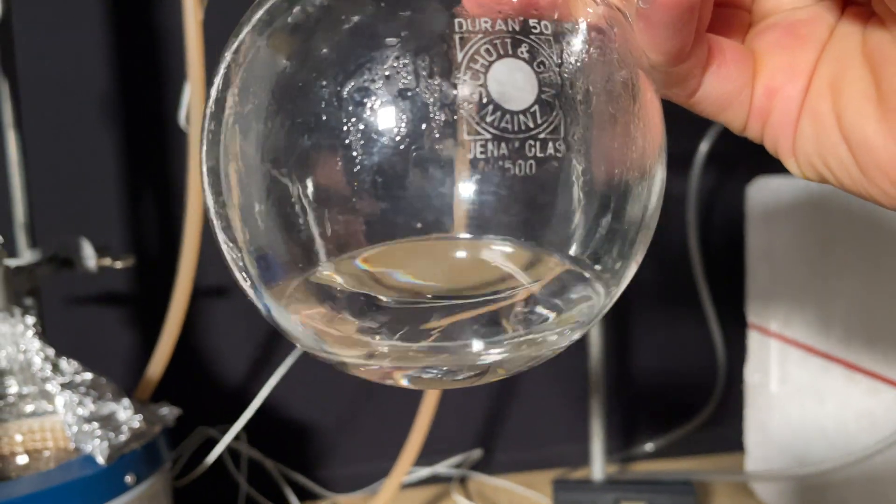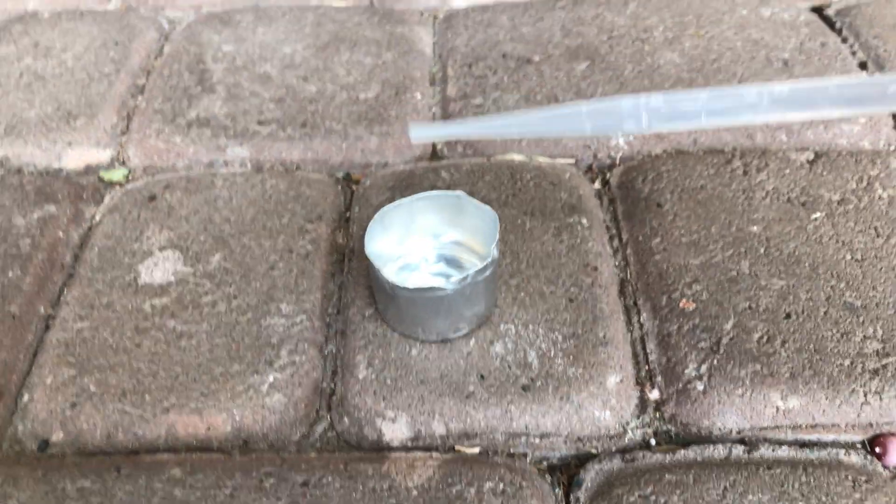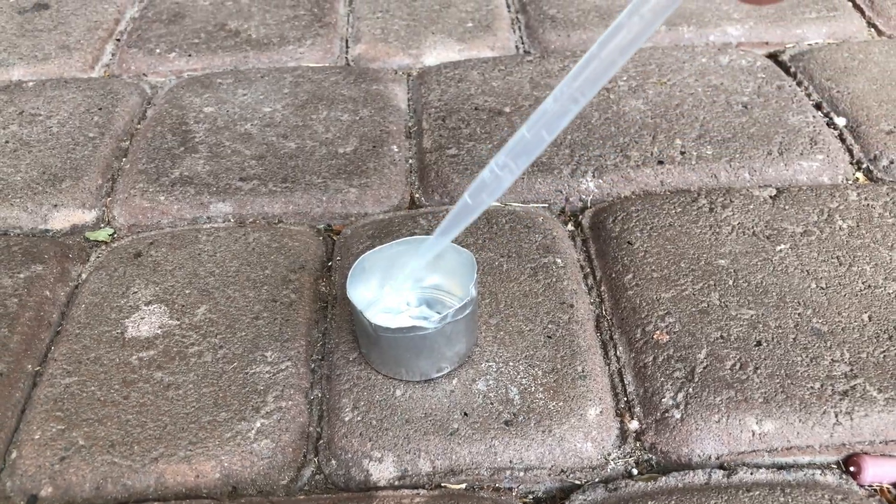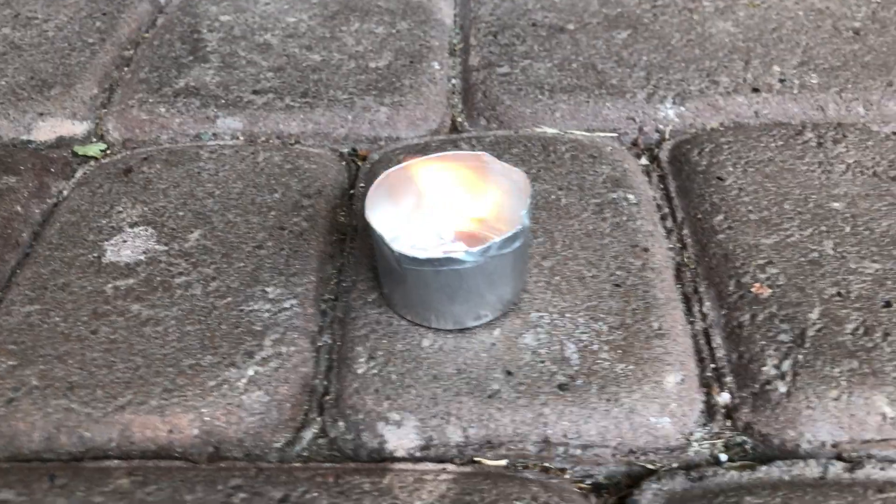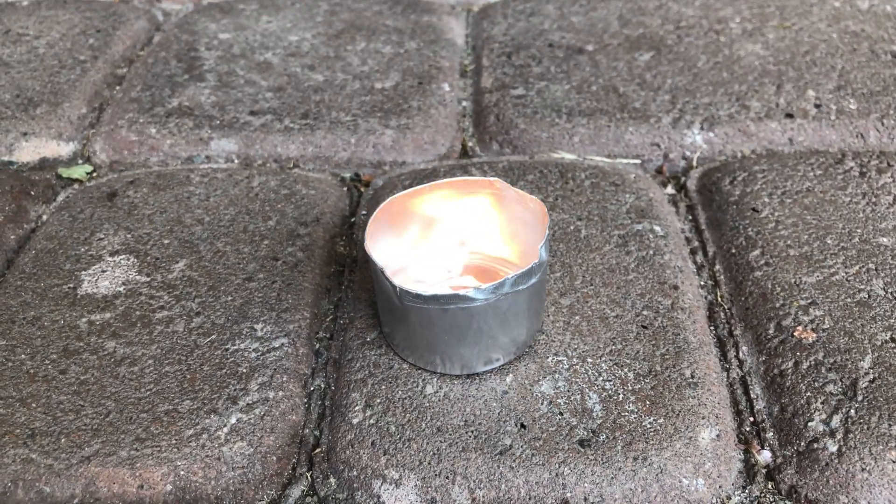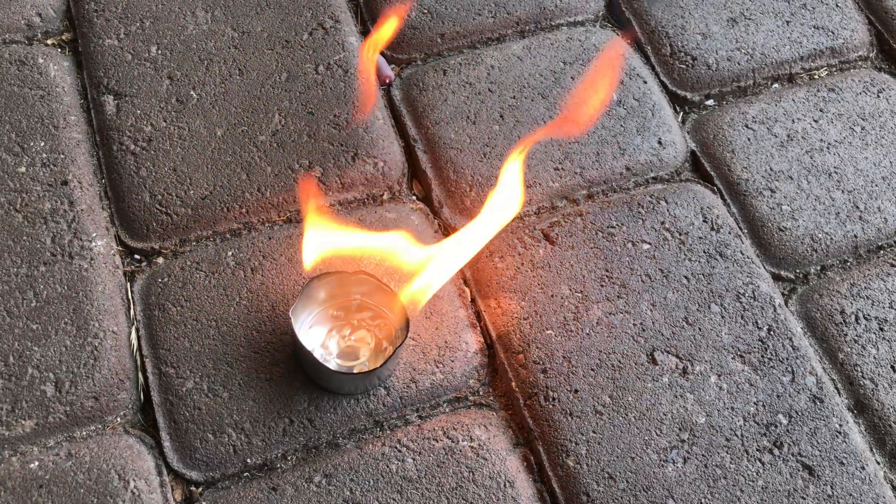Cyclopentanone ethylene ketal is a clear liquid with a mint-like smell and it's very flammable. To demonstrate the flammability we put about half a milliliter into an aluminum can and lit it on fire. It burned well and in the beginning it did not produce any smoke. I allowed it to burn for longer and later on you could see a lot of smoke.